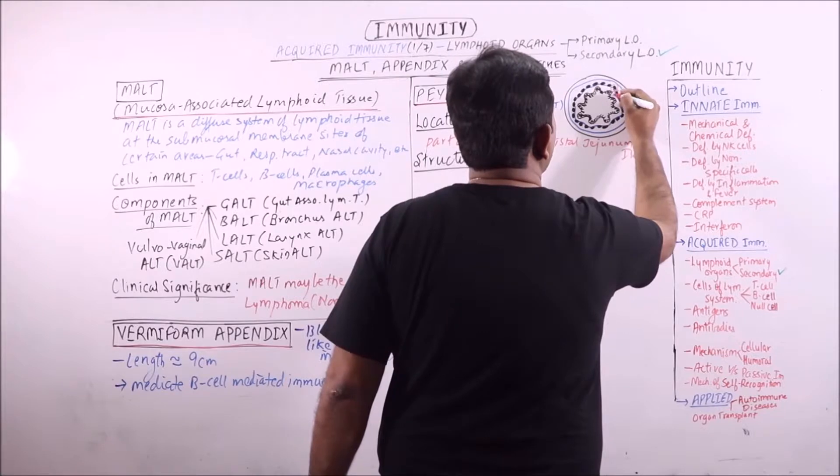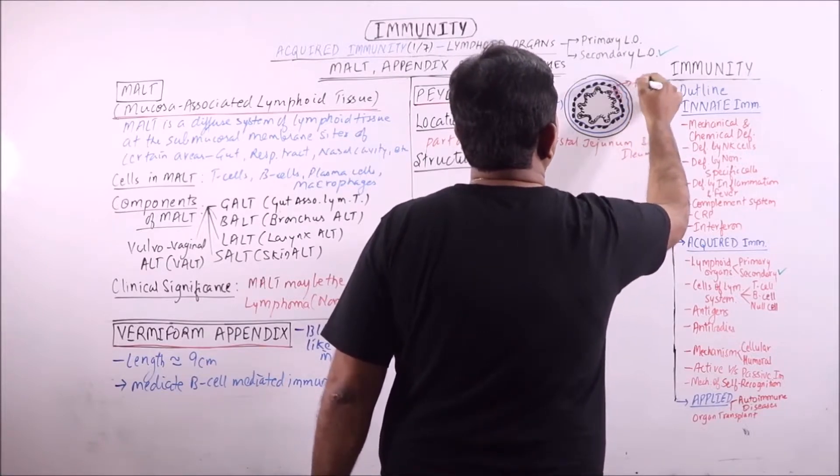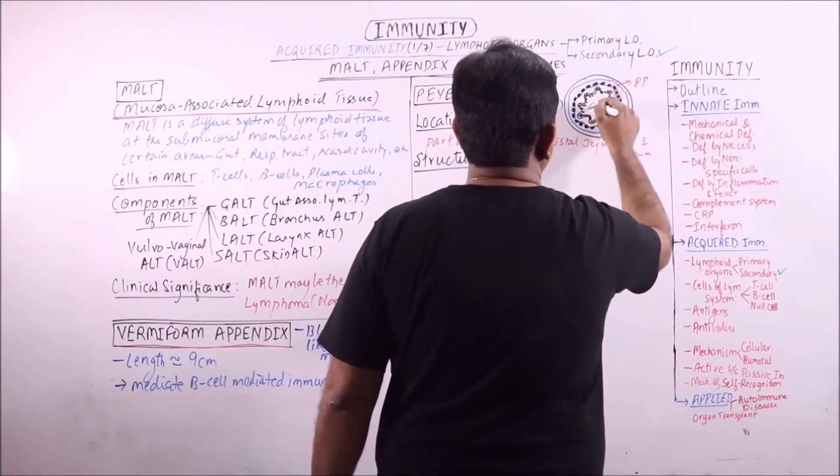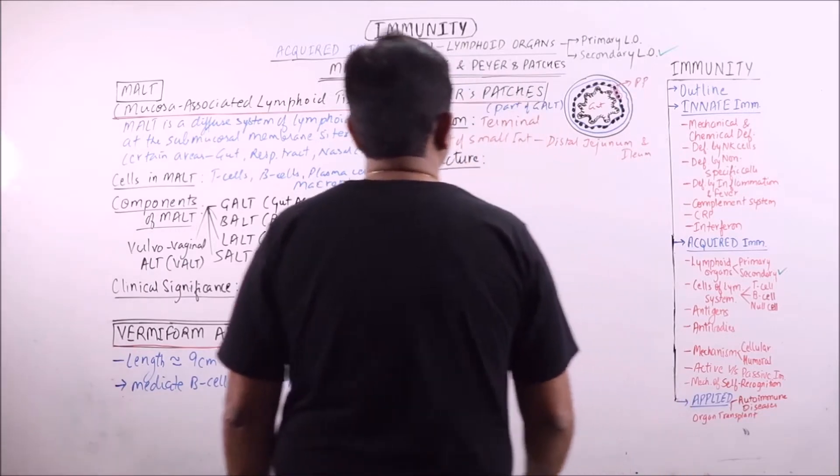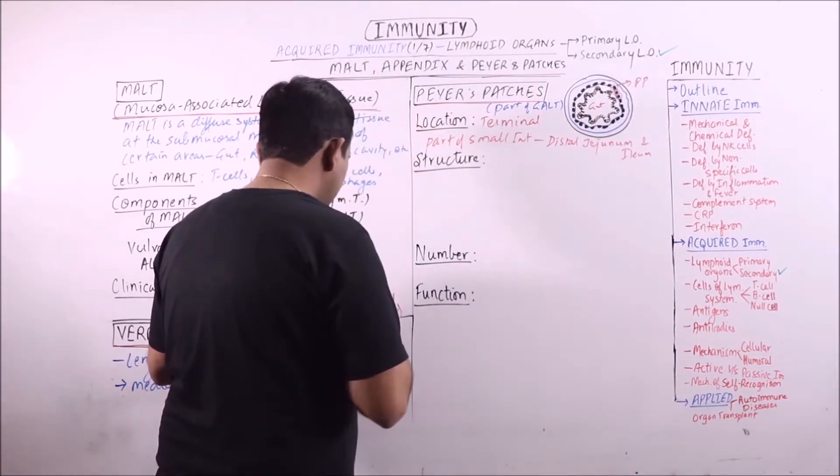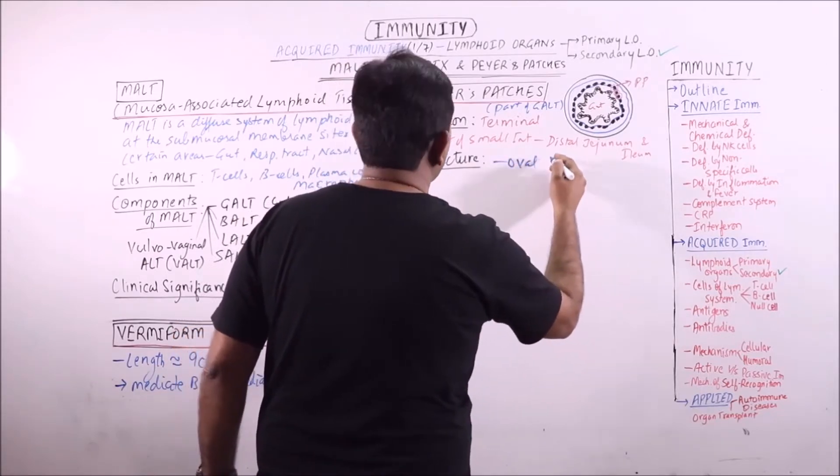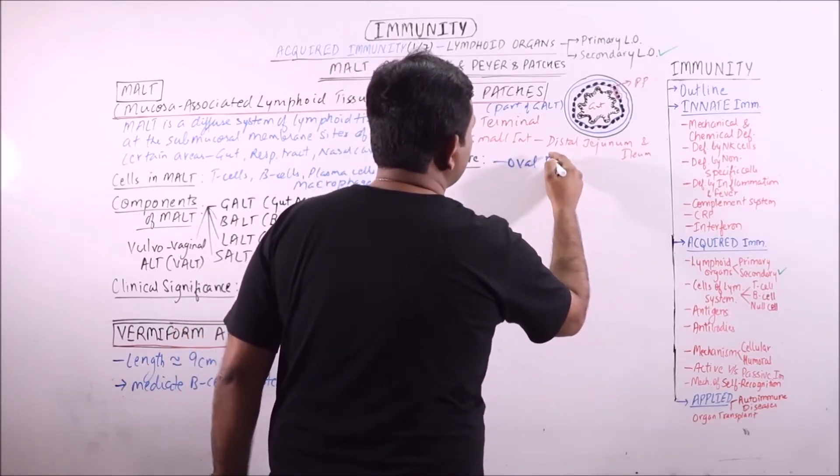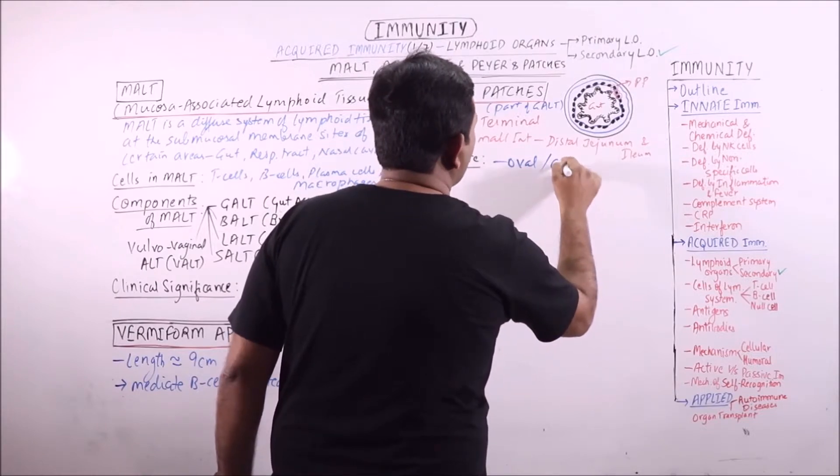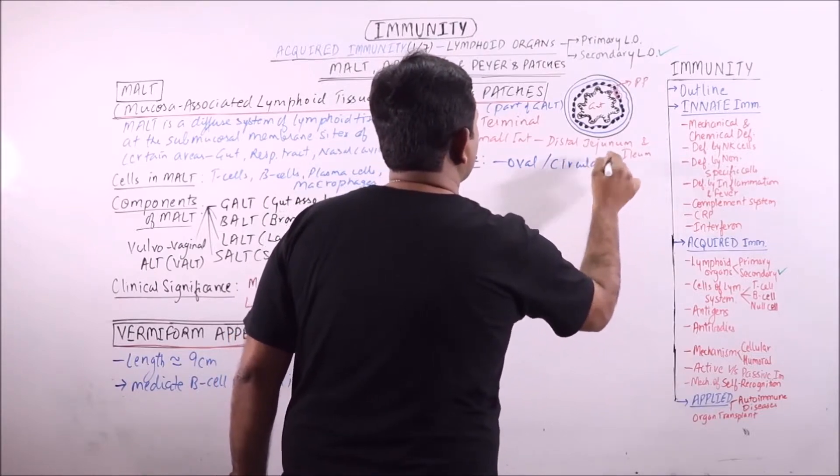We can observe these are the Peyer's patches. This is the section of gut. Outermost is serosa. Now what is the structure? On transverse section these appear oval or circular.